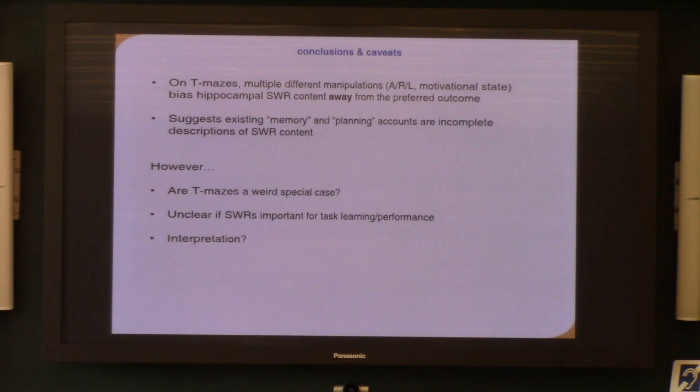So we think something is missed by the prevailing theories of what these internally generated patterns are for. Certainly they cannot account for all cases where we ask, what is the content of these sequences doing? There are open questions I'd love to figure out, like why is this happening? Are T mazes somehow a weird special case because there's only two alternatives? Is there something funny about switching between two motivational states? Is it actually the case that if you did a sharp wave ripple disruption experiment that the animals would be impaired on this kind of task? It would be important to test.